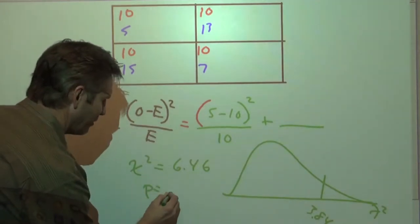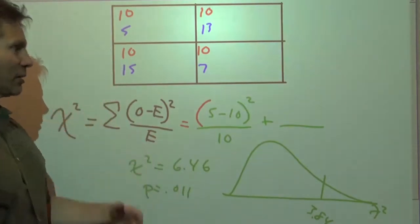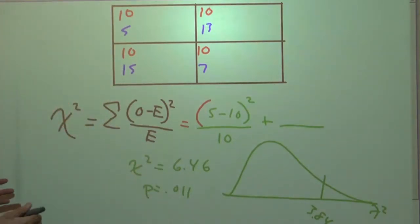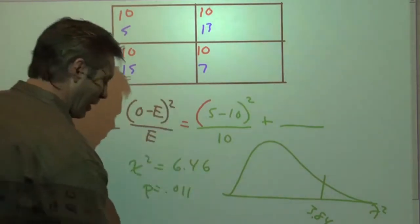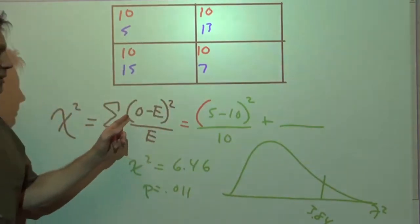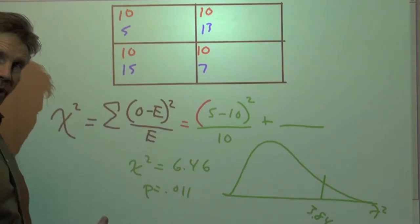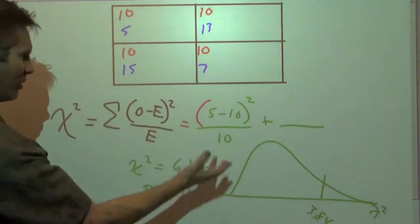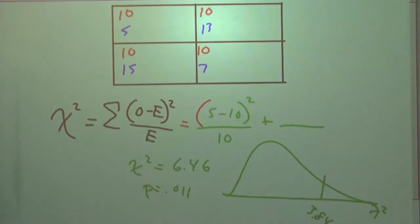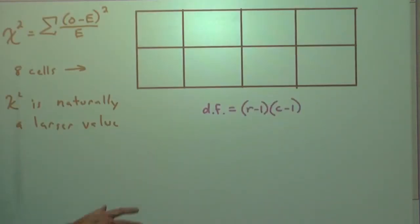And then we can use our calculators to actually find p-values. Turns out the p-value is real small, so yeah, the evidence suggests, based on our sample result, that the observed counts are so far away from the expected counts, we don't attribute it as being due to random chance. We think there's a significant difference between what we observed and what we expected. So that's really the workings behind the chi-squared.